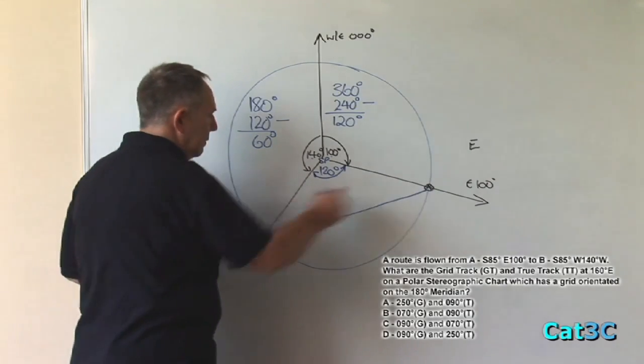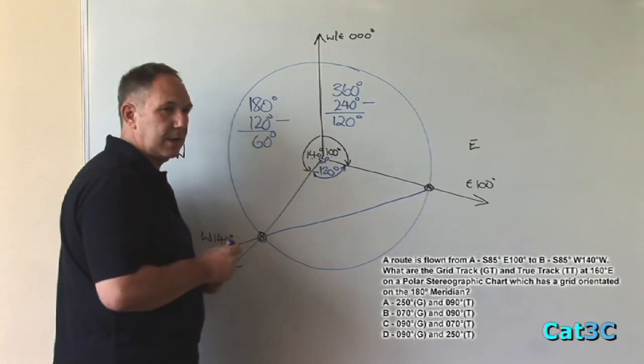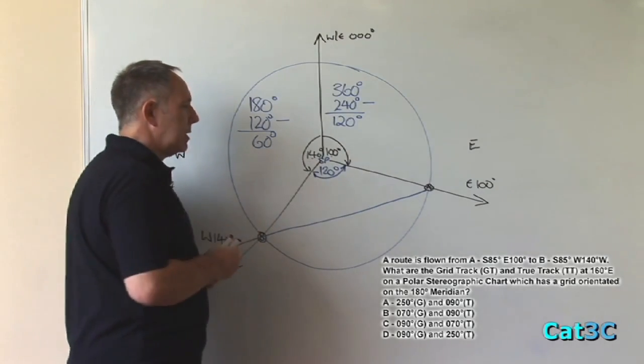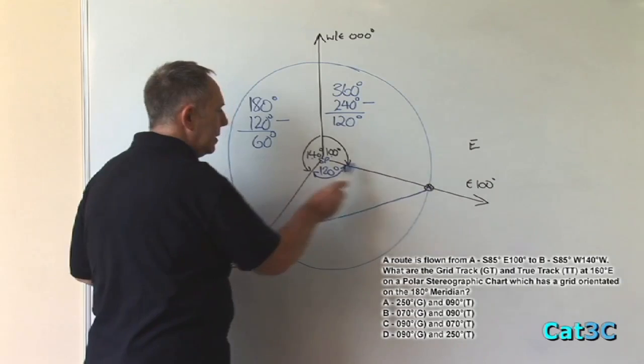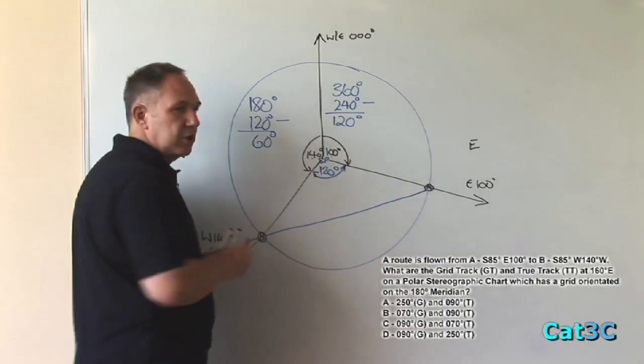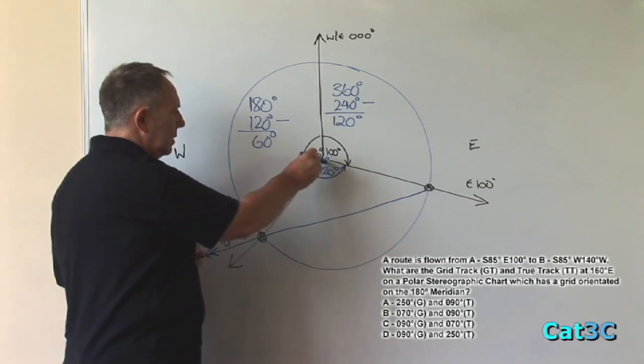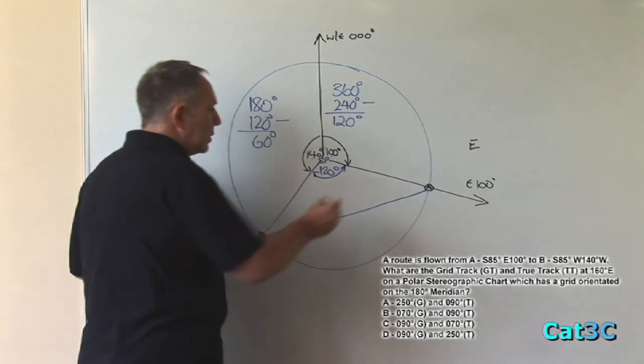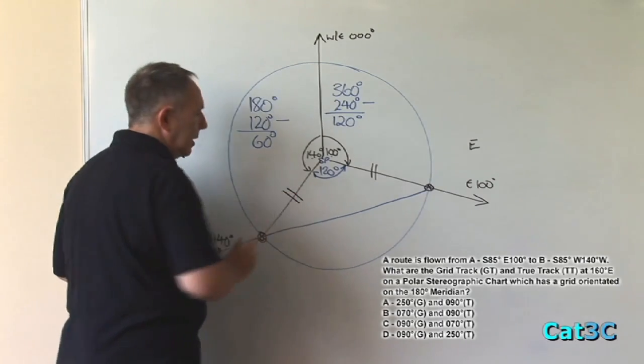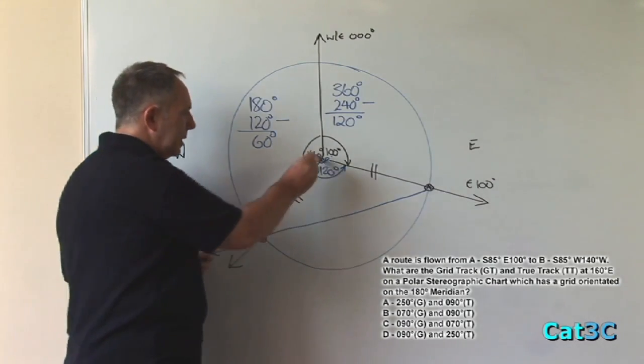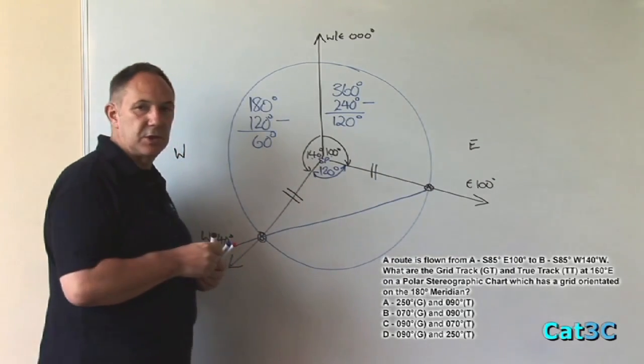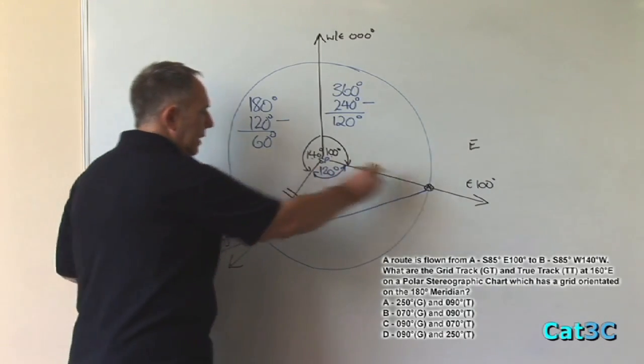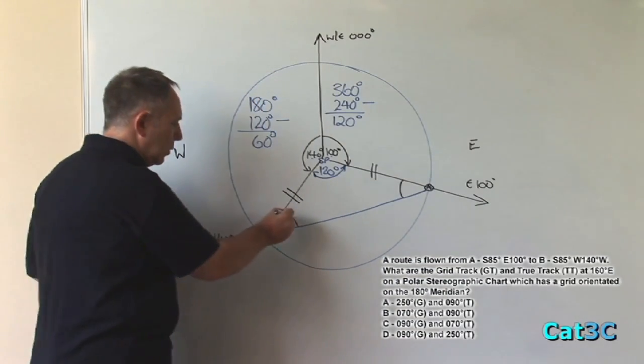Now this triangle, A-B south pole, has got a peculiar characteristic. Both A and B are at the latitude south 85 degrees. The pole is at south 90 degrees. Therefore the distance from A to south pole is equal to 5 degrees change of latitude, as is the distance from B to the south pole, also from 85 to 90. So that's also equal to 5 degrees change of latitude. Which means that that line and that line are the same length. Which means that A-B south pole is an isosceles triangle.